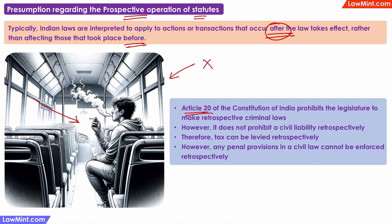Article 20 of the Constitution specifically prohibits the retrospective operation of criminal laws, so a person cannot be punished for doing something that was not illegal before the act came into force. However, the Constitution does not prohibit the retrospective operation of civil laws — therefore civil liabilities can be enforced, or taxes can be levied on past transactions. However, if there are any penal provisions within that civil law, those penal provisions cannot be enforced retrospectively.